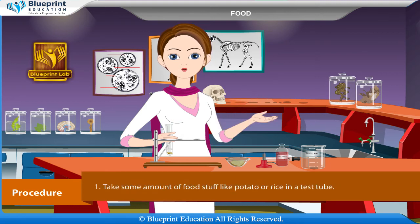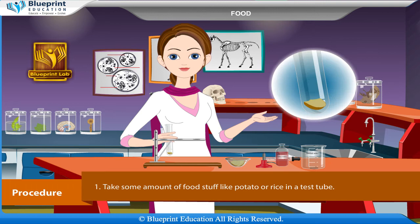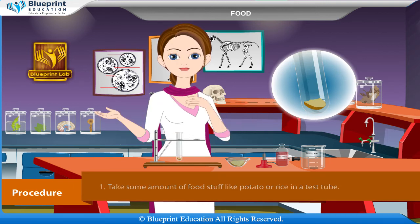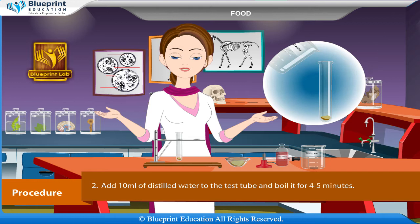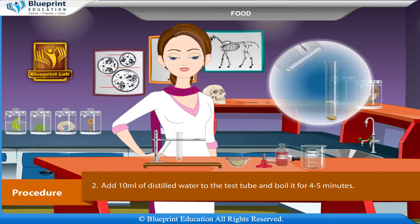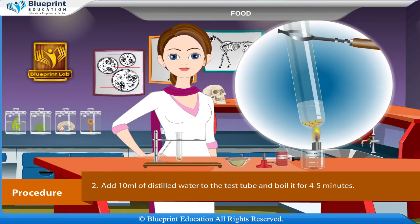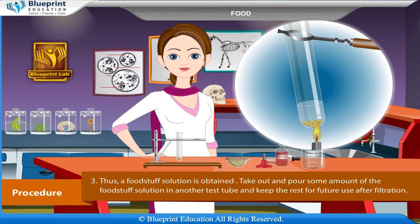Procedure: Take some amount of food stuff like potato or rice in a test tube. Add 10 ml of distilled water to the test tube and boil it for 4 to 5 minutes. A food stuff solution is thus obtained.